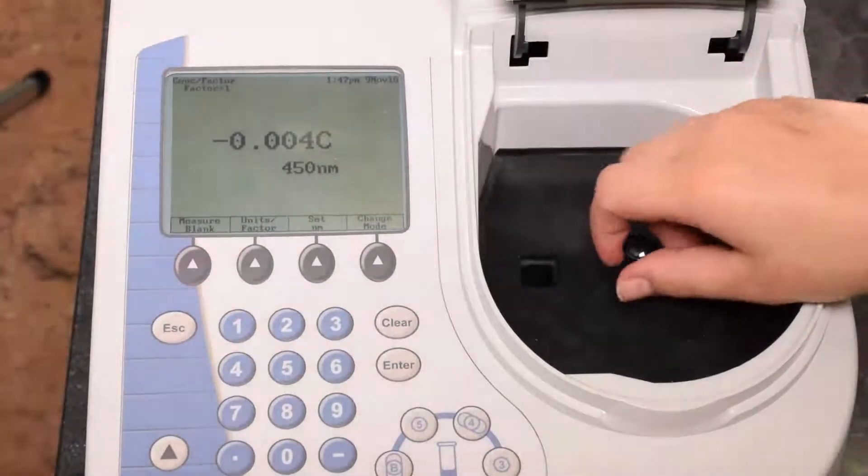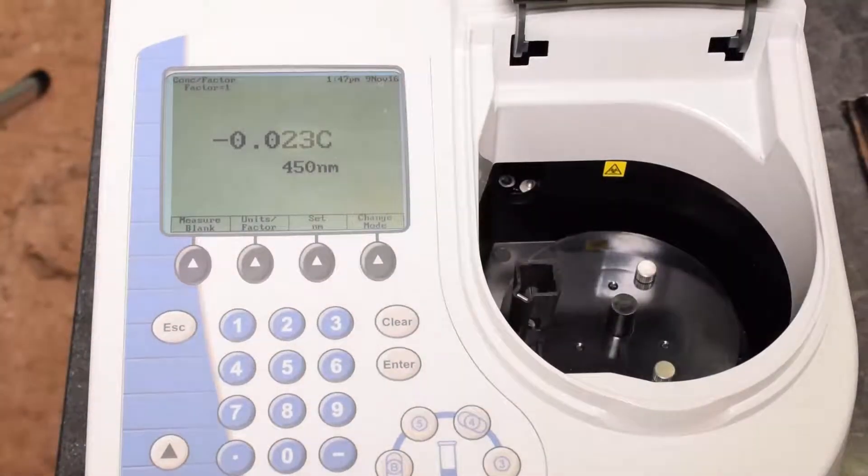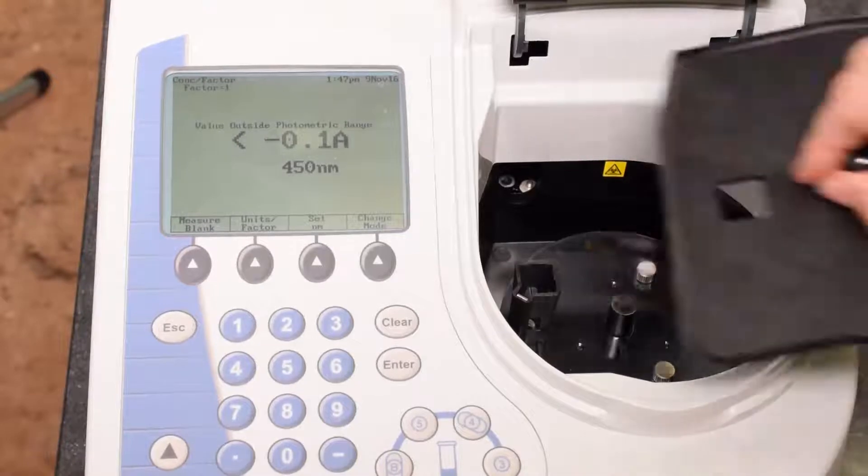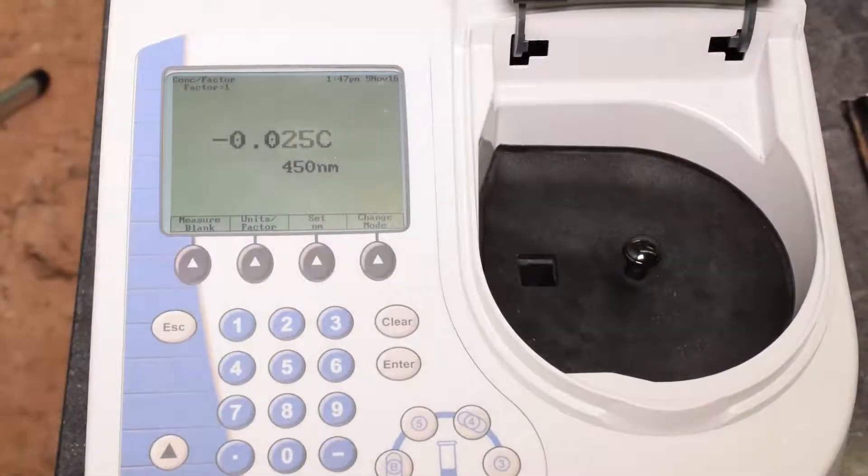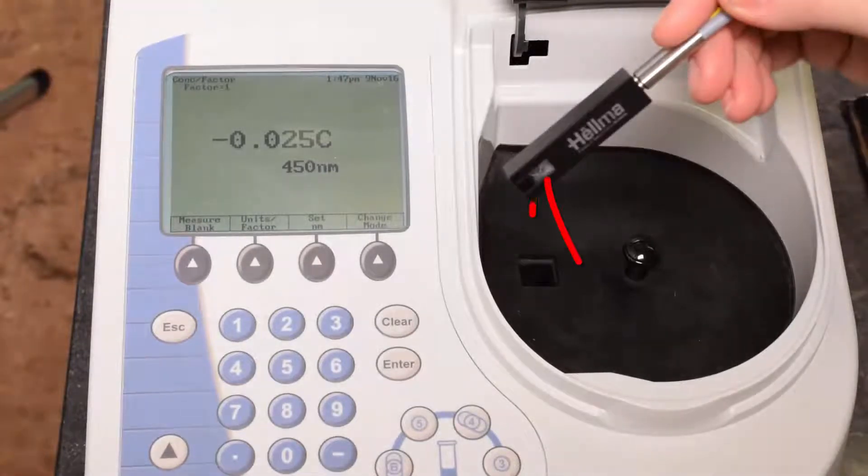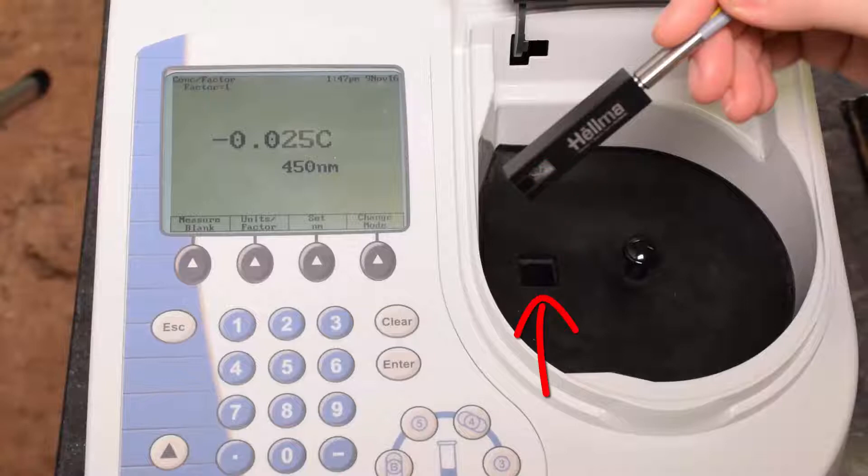First, make sure the spectrophotometer cover is correctly in place. Place the fiber optic probe in the spectrophotometer, making sure that the window in the fiber optic probe is in line with the light path in the spectrophotometer, as shown here.